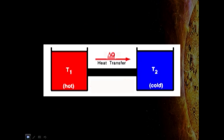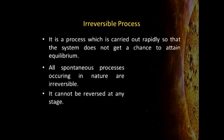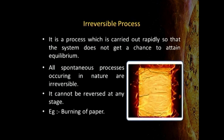Irreversible processes, which we commonly see around us, include heat flowing from a hot object to a cold object, gas expanding from high pressure to low pressure, and water flowing from a high altitude to a low altitude. These are all examples of irreversible processes and are mostly spontaneous in nature — they happen on their own without any energy input. To reverse them, we have to do work. For example, burning a piece of paper is irreversible — you cannot get the paper back, only ash remains.